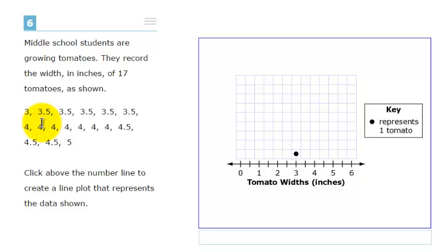There are five tomatoes that were 3.5 inches wide. The student would go to the number line and find 3.5 and click in five cells or five squares and that's how they would create the line plot.